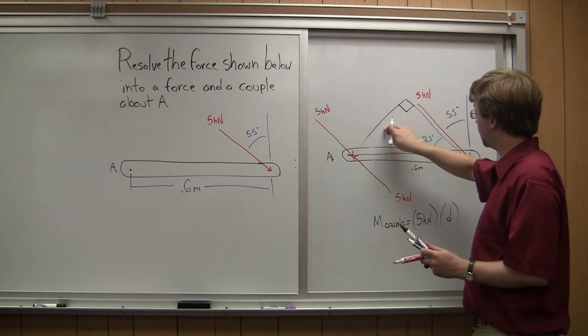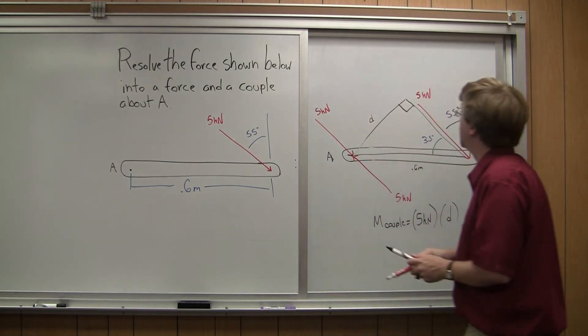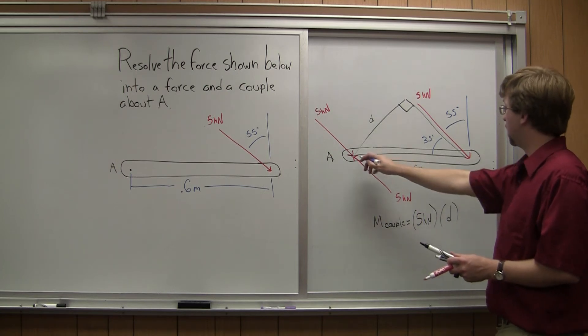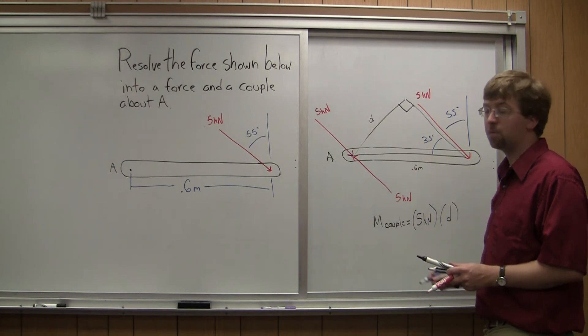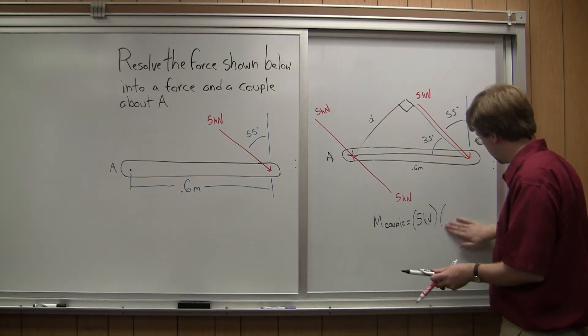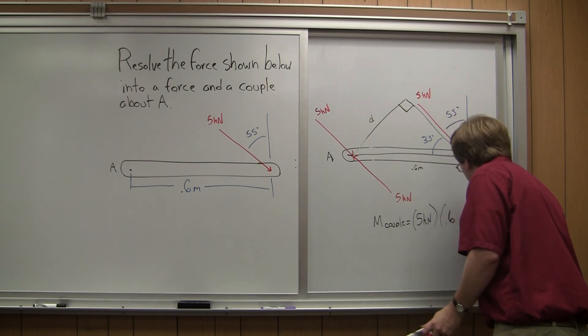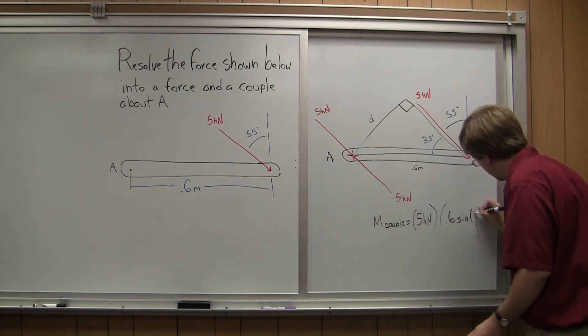I've got the opposite side, this is D, this is my perpendicular distance. And that is going to be equal to 0.6, the hypotenuse of my triangle, times sine 35 to get the opposite side. So D is going to be equal to 0.6 times sine of 35 degrees.